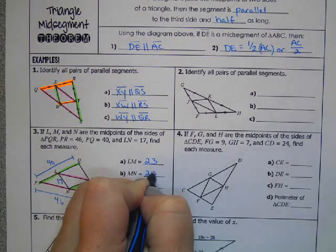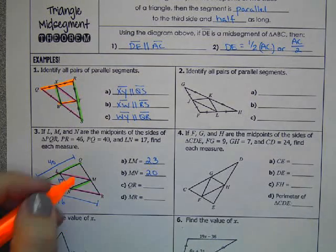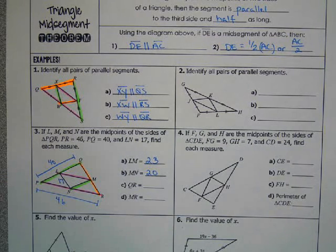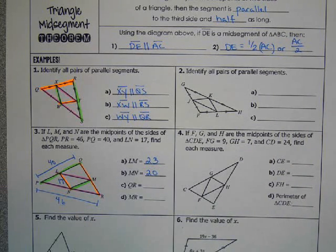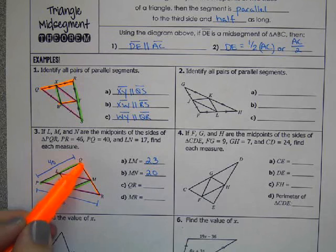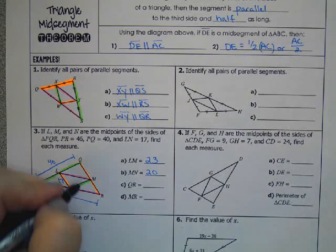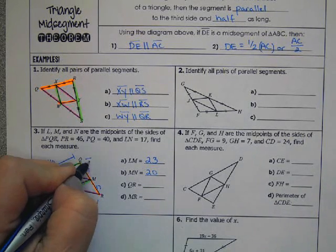And then QR is the side of the triangle. LN is the midsegment. So we're doing this in reverse. So QR is twice the size of LN. So each of these pieces would be 17. So the whole side would be double 17, which is 34.